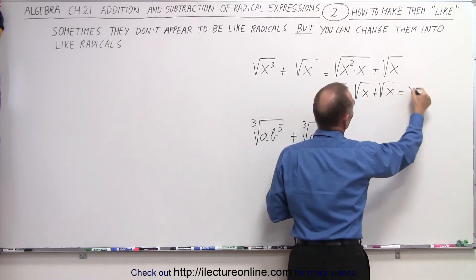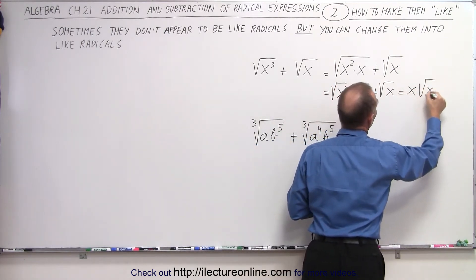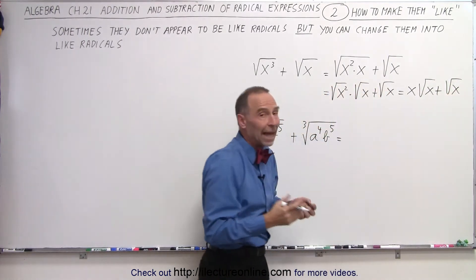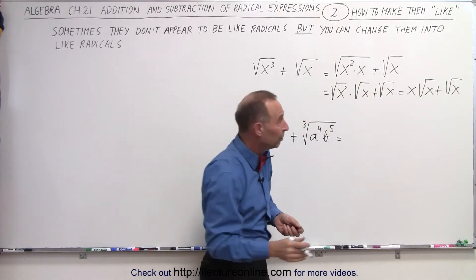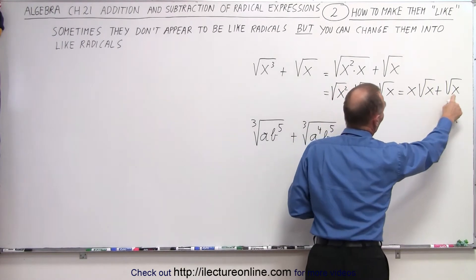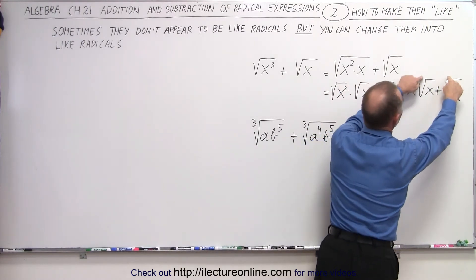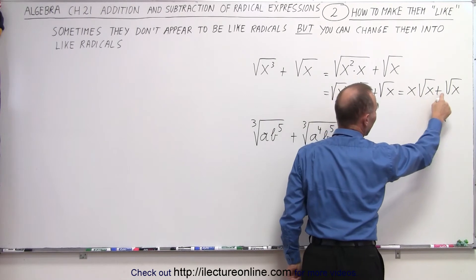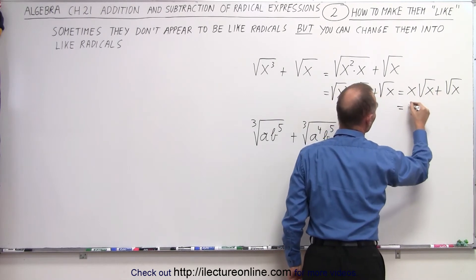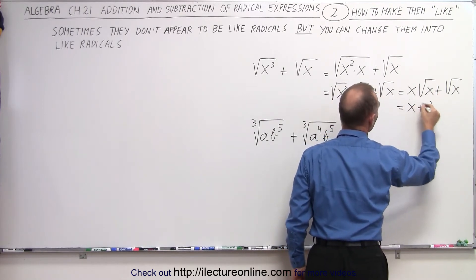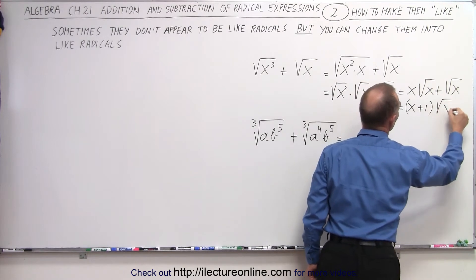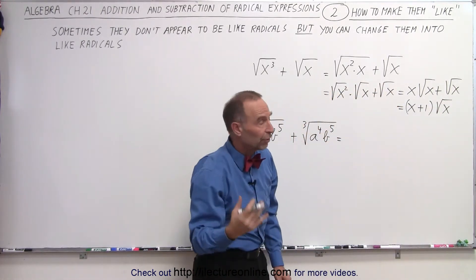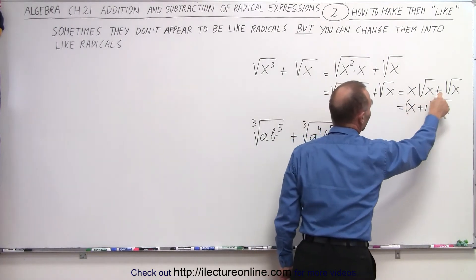So this can be written as x times the square root of x, plus the square root of x. And now you can see that we can actually add them because we have the radicand being the same and we have the index being the same. Here we have x of them and there we have one of them. Essentially, we factored out the square root of x and we're left with an x and a 1.